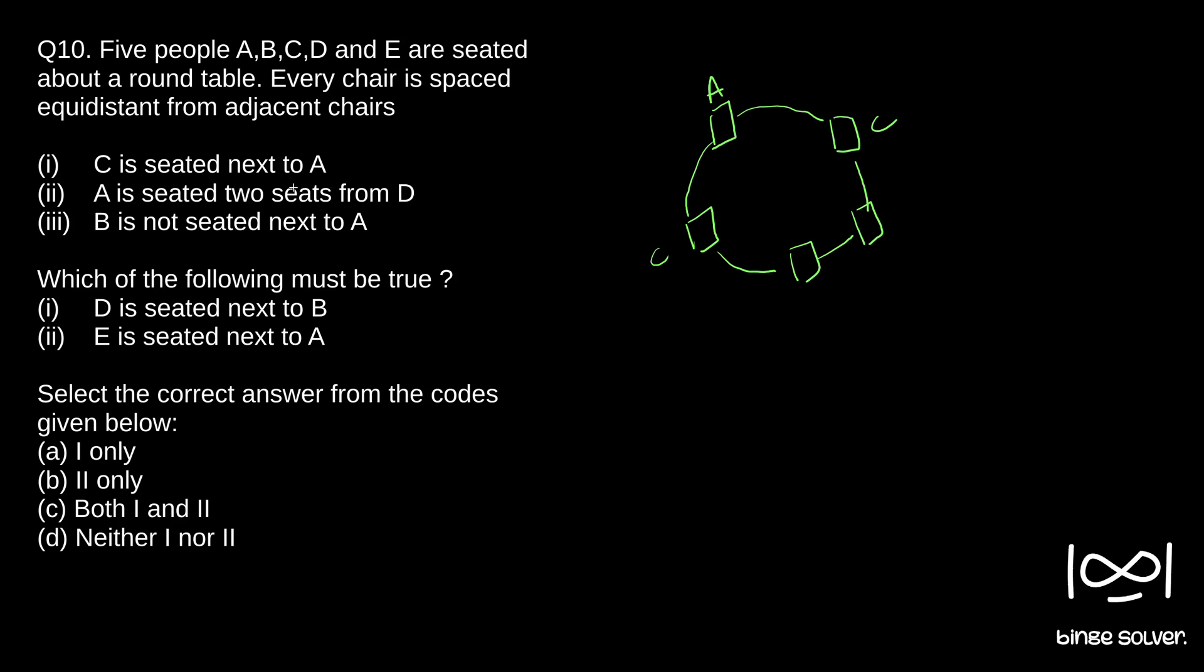A is seated two seats from D. So two seats from D means D has to be two seats away. In this direction, if you look, two seats away from D means D will be here. If you go this way, D will be here, or if you go this way, D could be here. Two seats away becomes this. Both possibilities are there.